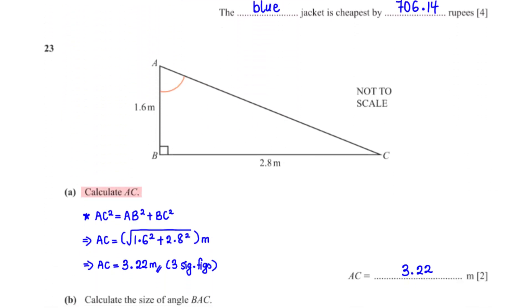Calculate AC. To get AC, we apply the Pythagoras theorem to the given right-angled triangle. This gives us AC squared equals AB squared plus BC squared. AB is 1.6 meters and BC is 2.8 meters. When we plug in these values into the equation and make AC the subject, this is what we get which is equal to 3.22 meters rounded to three significant figures.